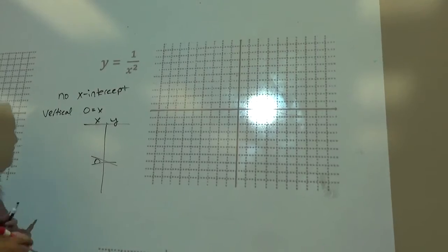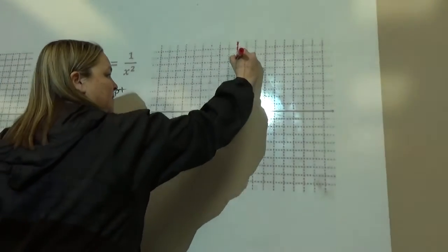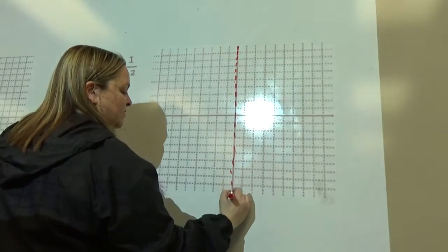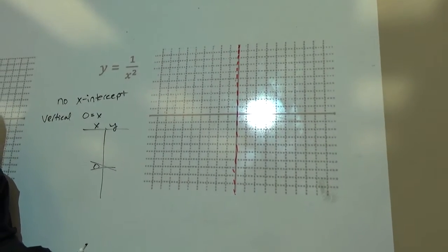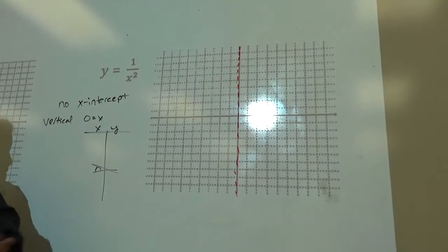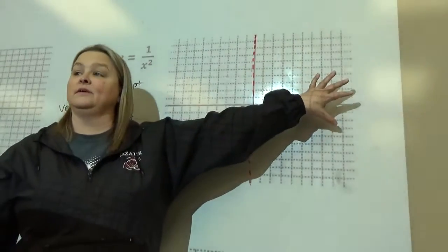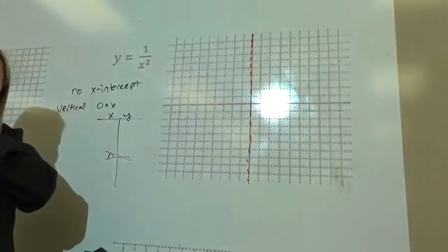So I'm going to go over here on x equals zero, and put over a dotted line. It's not going to touch there. My graph is going to look one way on this side and another way on this side.